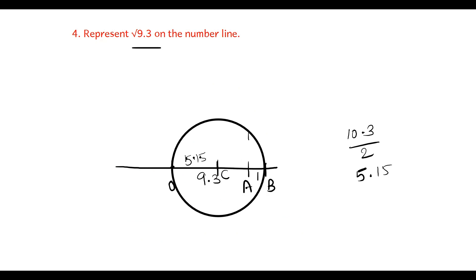Now draw a perpendicular line from A to P. C to P is the radius. A to C is 4.15. The radius value is 5.15. Now we have to find AP.